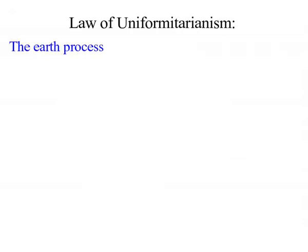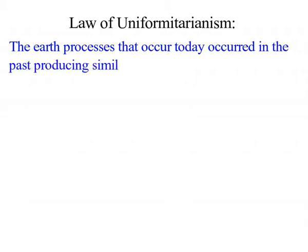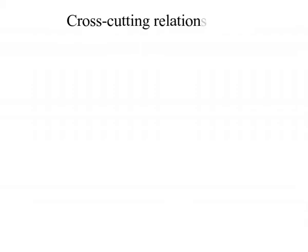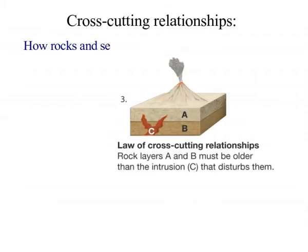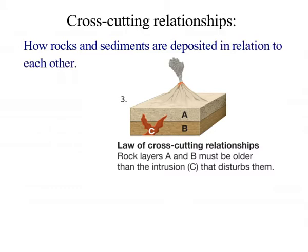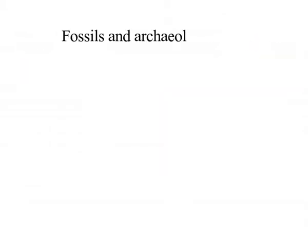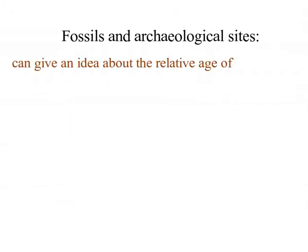Law of Uniformitarianism: the earth processes that occur today also occurred in the past, producing similar geological features. The cross-cutting relationships discuss how rocks and sediments are deposited in relation to each other. Fossils and archaeological sites can give an idea about the relative age of the rock in which they are found.